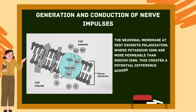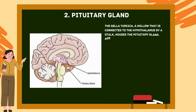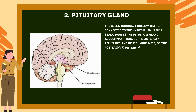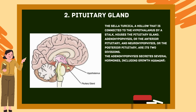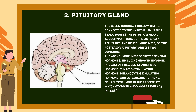Number two: Pituitary gland. The sella turcica, a hollow connected to the hypothalamus by a stalk, houses the pituitary gland. Its two divisions are the adenohypophysis (anterior pituitary) and neurohypophysis (posterior pituitary). The adenohypophysis secretes several hormones including growth hormone, prolactin, follicle-stimulating hormone, thyroid-stimulating hormone, melanocyte-stimulating hormone, and luteinizing hormone. The neurohypophysis releases oxytocin and vasopressin.